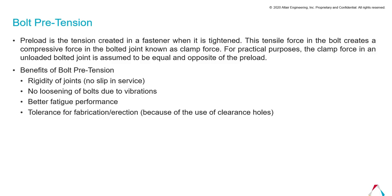Pretension is nothing but a preload — a tension created in a fastener when it is tightened. A tensile force in a bolt creates a compressive force in a bolted joint, known as clamp force. This clamp force in an unloaded bolted joint is assumed to be equal and opposite to the preload.